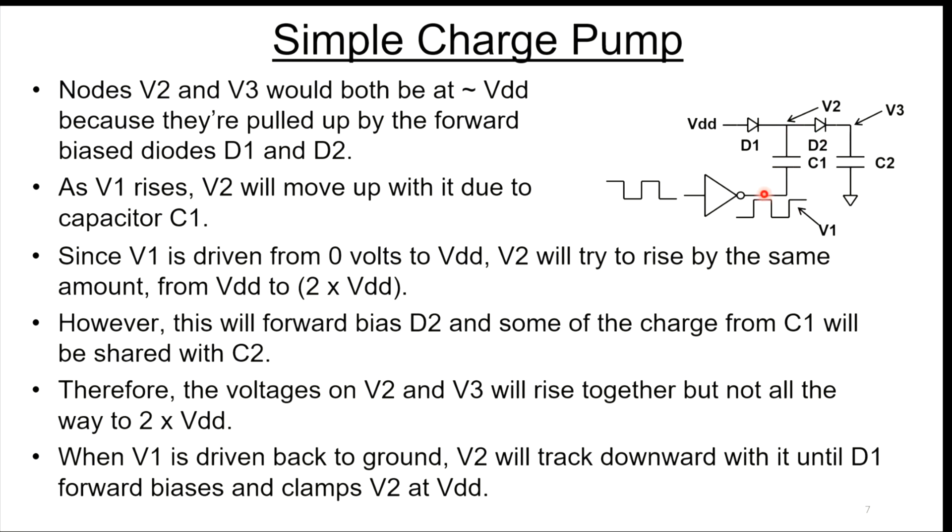When V1 is driven back to ground, V2 will track downward with it until D1 forward biases and clamps V2 at VDD. V3, on the other hand, has been pumped up a little bit higher than VDD, and it's going to sit there because now you have a reverse biased D2.